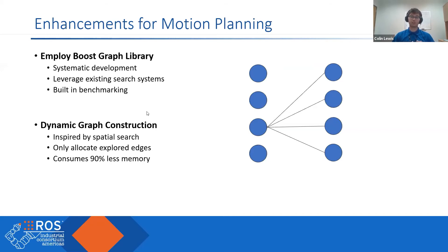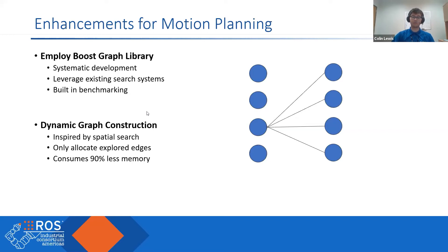This is actually how those free space planners do their searches — they will dynamically construct a graph through Cartesian space to find a route between the waypoints, not necessarily the optimal one. We are adapting this approach for use in these configuration space ladder graphs. The benefit is that we'll only allocate the edges that we add to the graph, so we can cut down on our memory footprint. Preliminary testing is showing that this can take as little as 10% of the original graph and still arrive at satisfactory solutions.